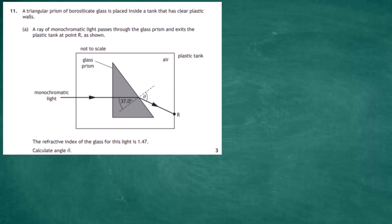Question 11 from section 2 of the 2022 higher physics examination of the SQA. A triangular prism of borosilicate glass is placed inside a tank that has clear plastic walls. A ray of monochromatic light passes through the glass prism and exits the plastic tank at point R as shown.